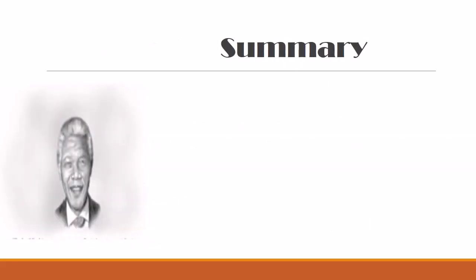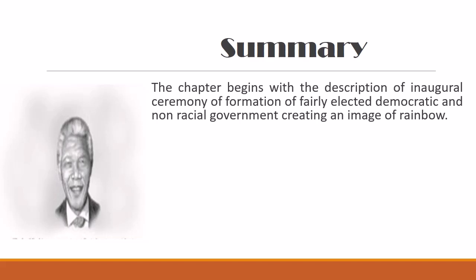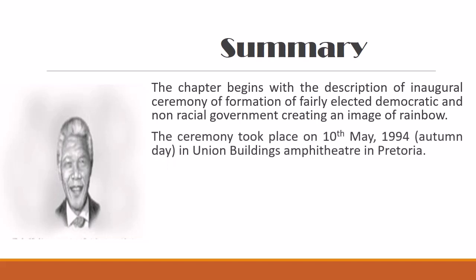The chapter begins with the description of the inaugural ceremony of the formation of the first fairly elected, democratic and non-racial government, creating an image of a rainbow. All the people of all races, all communities, all castes, all religions, and all colors of skin were part of this ceremony. All these people together took part in forming this government — that is why the variety of people is referred to as a rainbow.